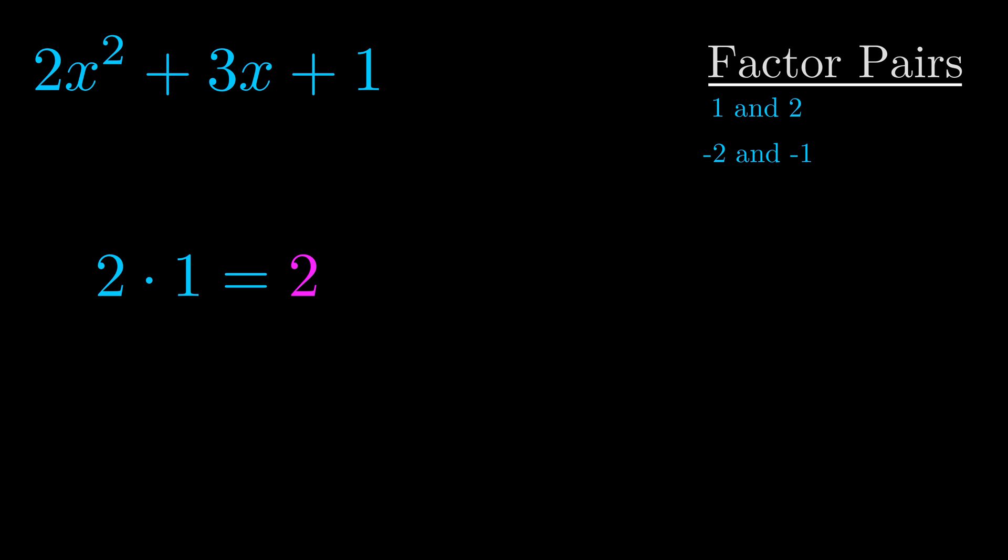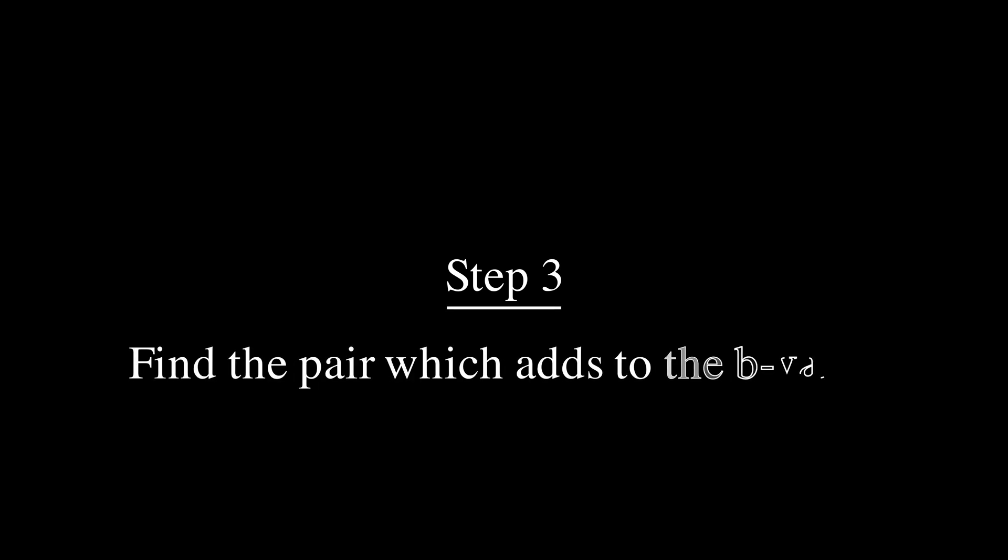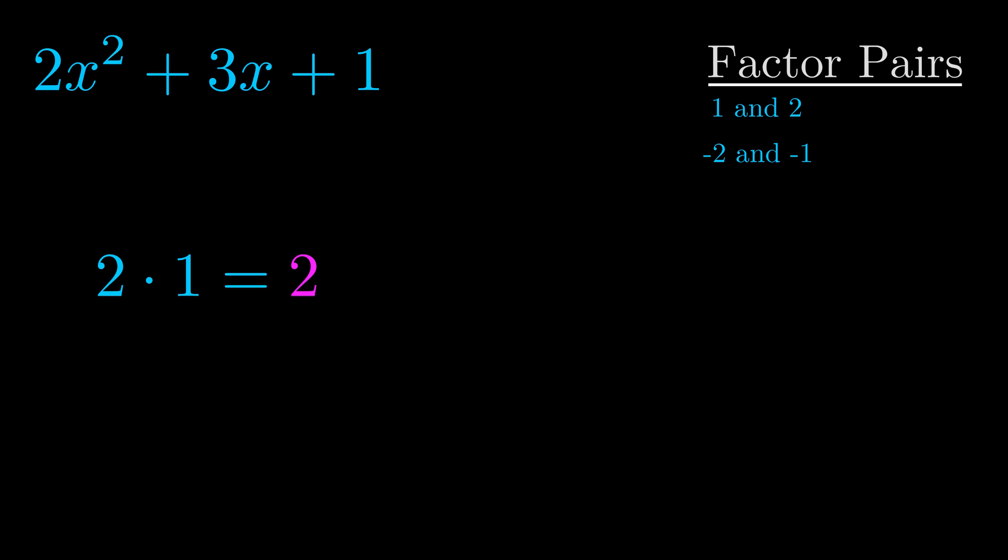Now once you have these factor pairs, the goal is to find which of these pairs adds to the b value. The b value is the coefficient on the x term. That's the middle term, the one that we haven't done anything with yet. And really this is the only factor pair that we need.